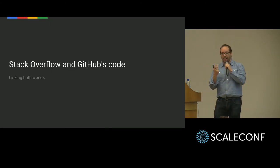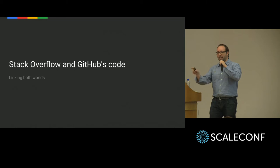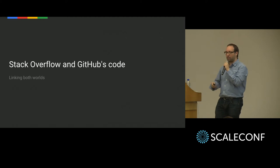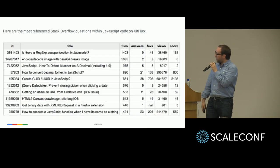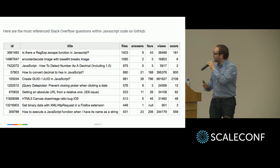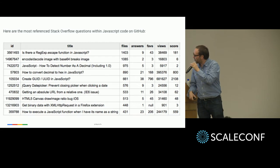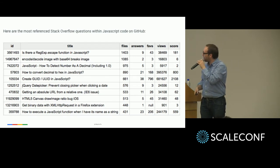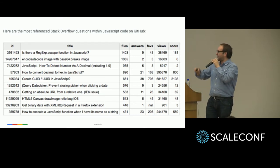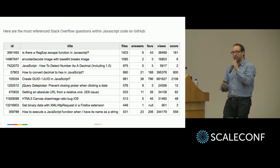You can also find, across all of this code, when people are linking to Stack Overflow. You copy some code and put a link to Stack Overflow to tell your teammates where you got the code from. It's a query like this, and these are the results: 'Is there a regular special escape function in JavaScript?', 'How to get an absolute URL?', 'How to convert decimal to hex in JavaScript?' — that one has a lot of views. People are linking from their code to Stack Overflow.